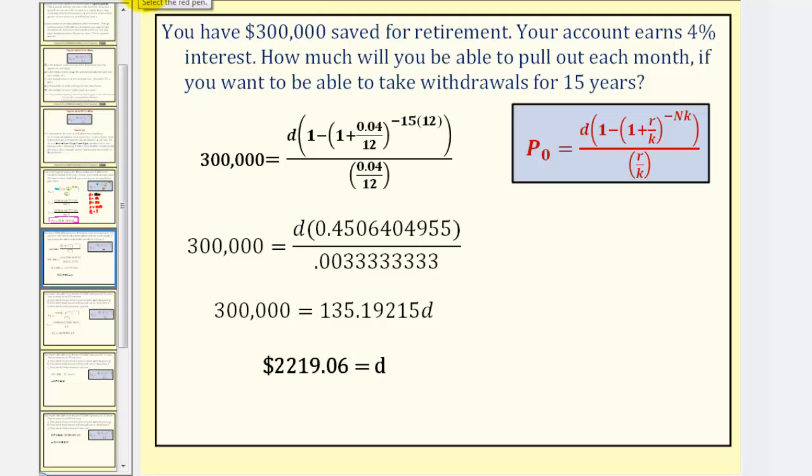Let's begin by identifying the important information. $300,000 is P sub zero, the starting amount or principal. The account earns 4% interest, and therefore R is equal to 0.04. You want to withdraw every month, so K is going to be 12. And you want to make withdrawals for 15 years, so N is equal to 15.